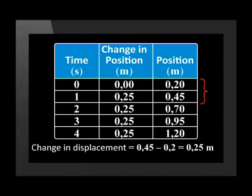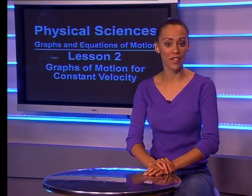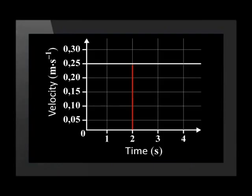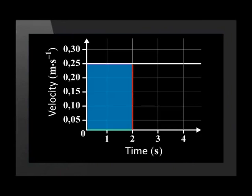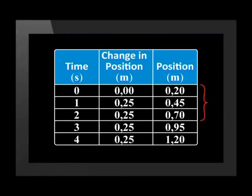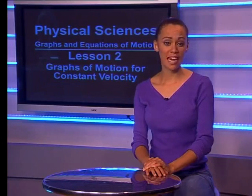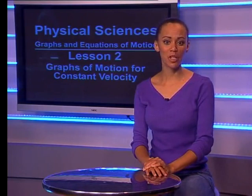The change in displacement during the first second is equal to 0.45 meters minus 0.2 meters, which equals 0.25 meters. Now let's check if this matches for two seconds. Using our equation, the displacement after two seconds equals 2 multiplied by 0.25 meters per second, which equals 0.5 meters. When we multiply the velocity by time, we are actually multiplying the length of the rectangle by the breadth. Therefore, the area under a velocity versus time graph gives us the displacement at a certain time. The position at two seconds — 0.7 meters — minus the original position of 0.2 meters confirms that the displacement at two seconds is 0.5 meters.